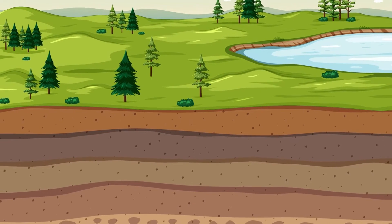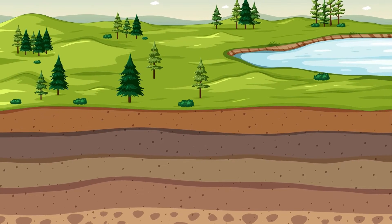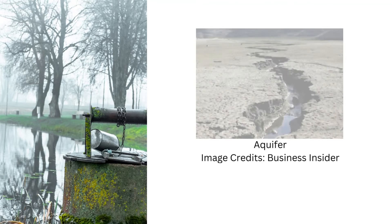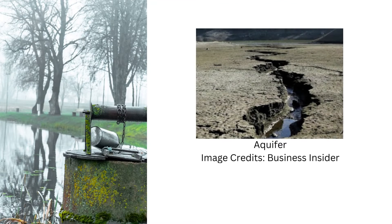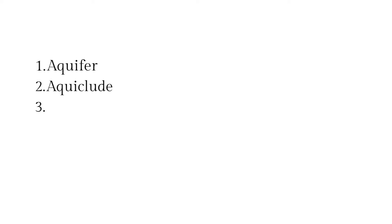Groundwater occurs in many types of geological formations under the ground, some of which can be accessed from the surface, while some cannot. The major four types of water-bearing formations under the ground are aquifer, aquaclude, aquitard, and aquifuge. We will learn about each of these geological formations in detail.